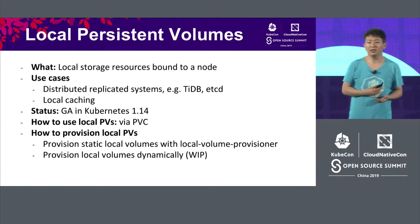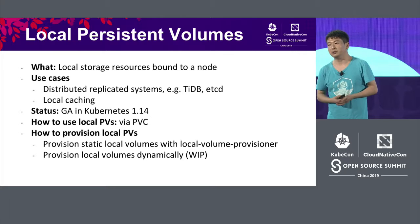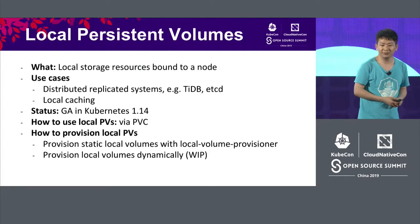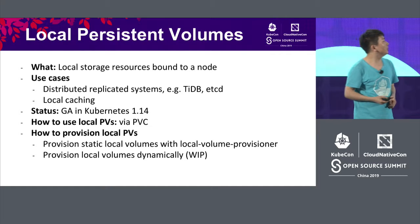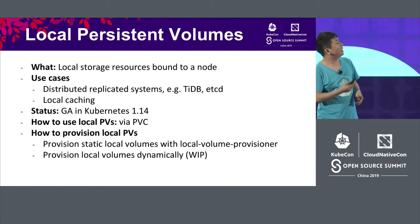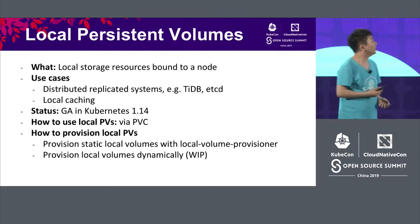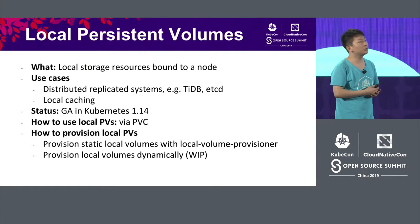For local storage, there are two types of scenarios. One is TiDB and ETCD, and another is local caching, which can tolerate data loss. Local storage in Kubernetes 1.14 is already generally available, and you're welcome to use it.